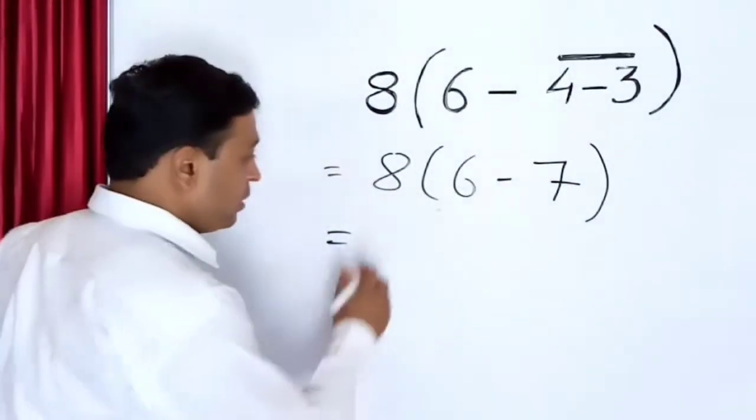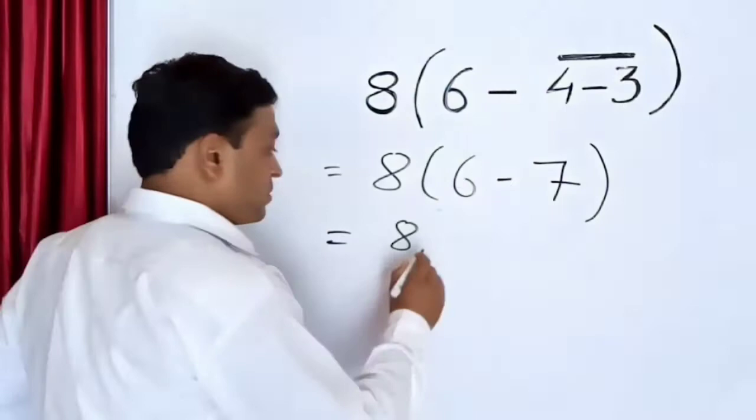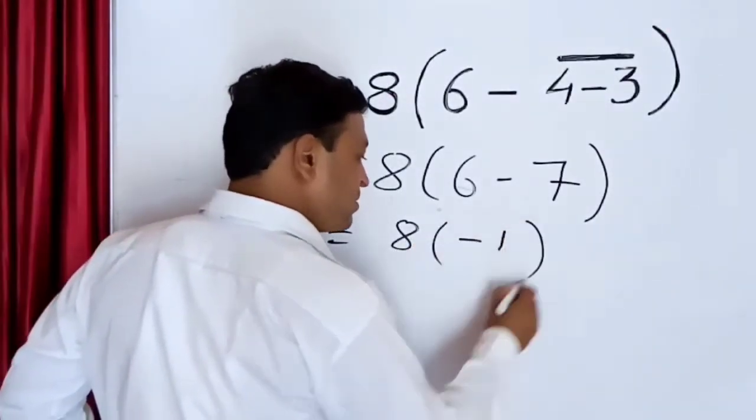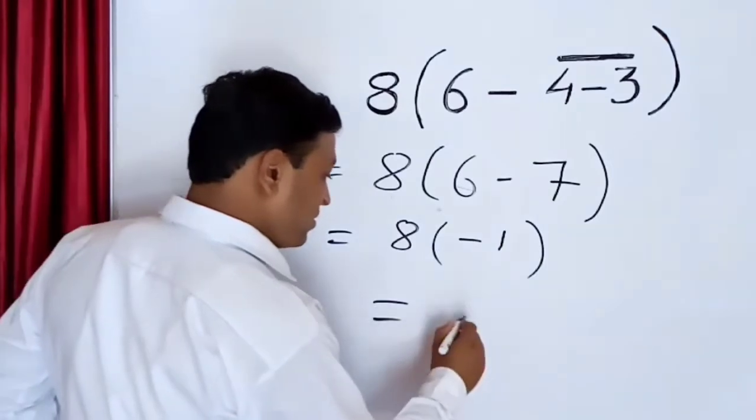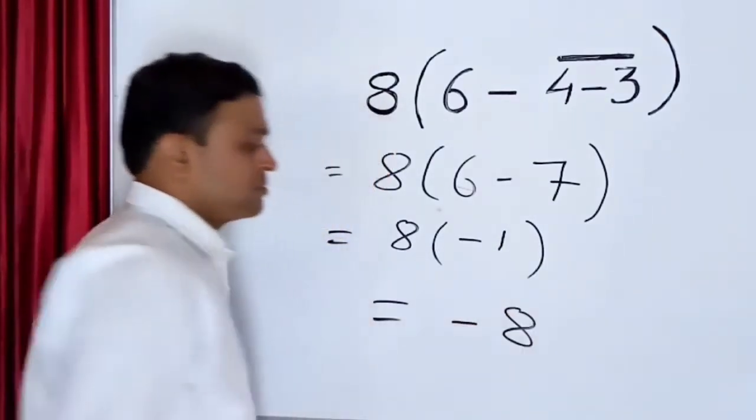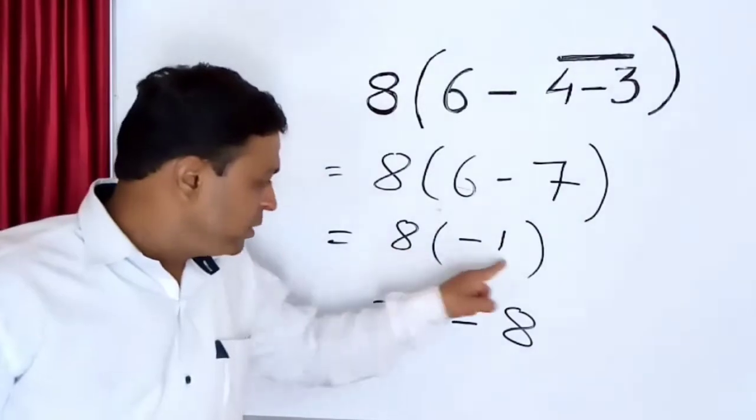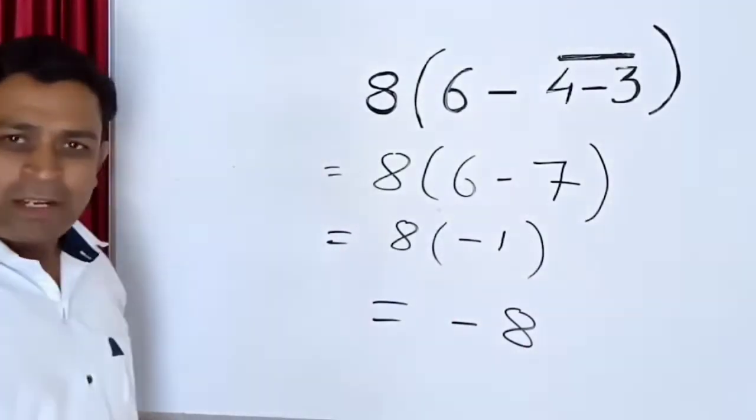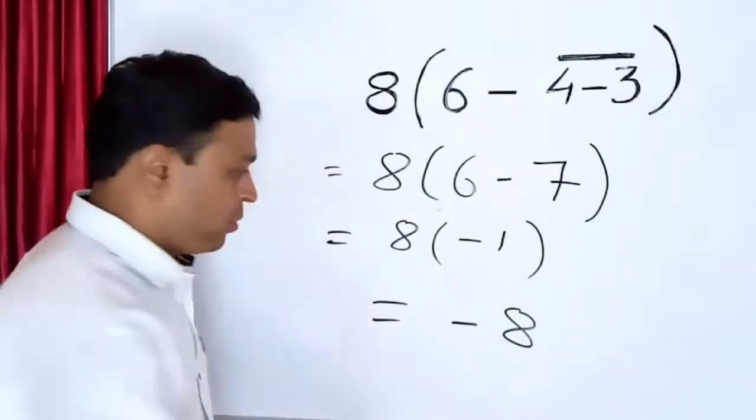Then after that, simply he will follow the steps in mathematics: 8 in bracket 6 minus 7, that is minus 1, then 8 into minus 1, that is equal to minus 8. Here he will get minus 8 as his answer, but this method is totally wrong.